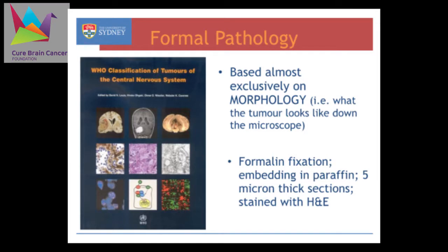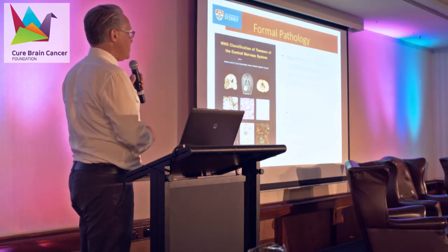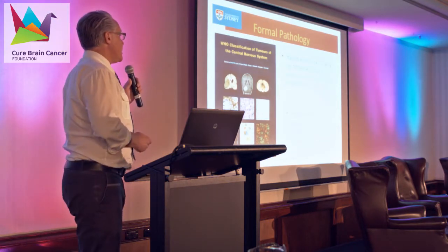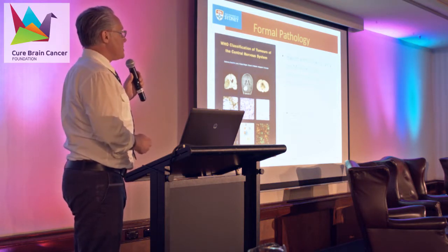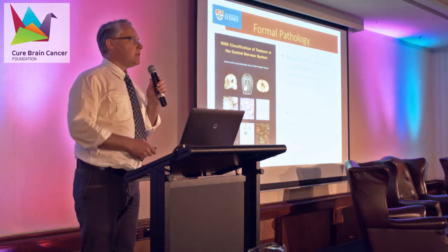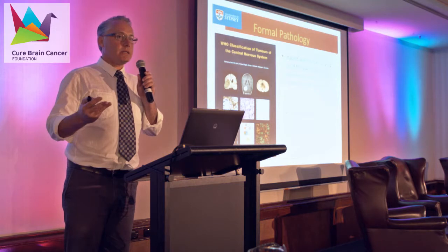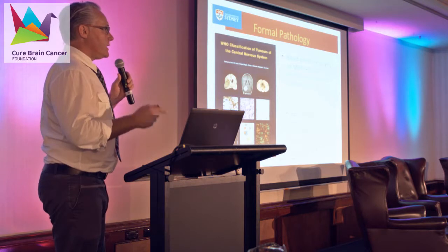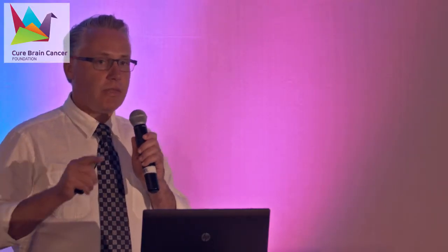The formal pathology report is based on this WHO classification of tumours of the central nervous system. This is used essentially all over the world and certainly here in Australia. This classification of tumours is based almost exclusively on morphology — what the tumour looks like under the microscope. We've already heard a little about molecular tests today; it's a very exciting part of research, but to date they are not changing the diagnosis. The diagnosis rests on what the tumour looks like down the microscope.